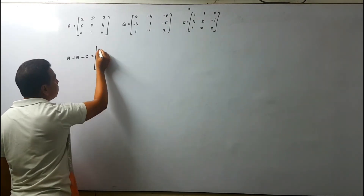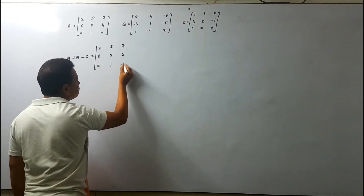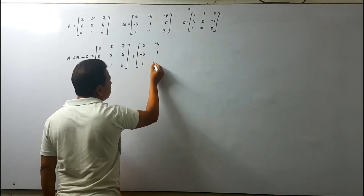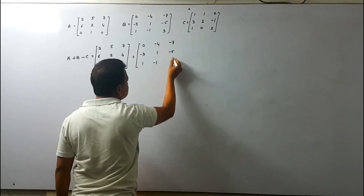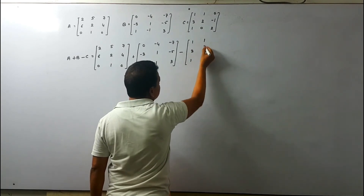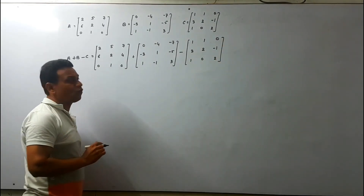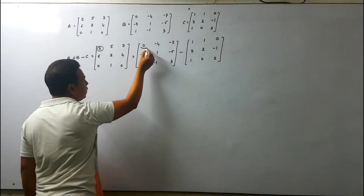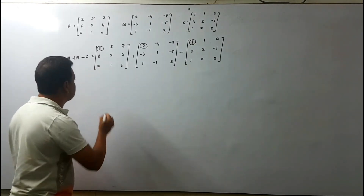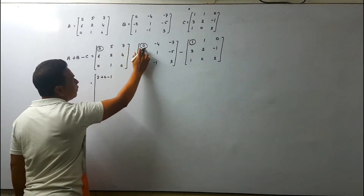Matrix A: 2, 6, 0, 5, 2, 1, 7, 4, 0. Plus matrix B: 0, minus 3, 1, minus 4, 1, minus 1, minus 7, minus 5, 3. Minus matrix C: 1, 3, 1, 1, 2, 0, 0, minus 1, 2. We focus on first element with first element, keeping the signs in mind: first A plus B, then minus C. So: 2 plus 0 minus 1, then 5 minus 4 minus 1, and so on for each corresponding element.